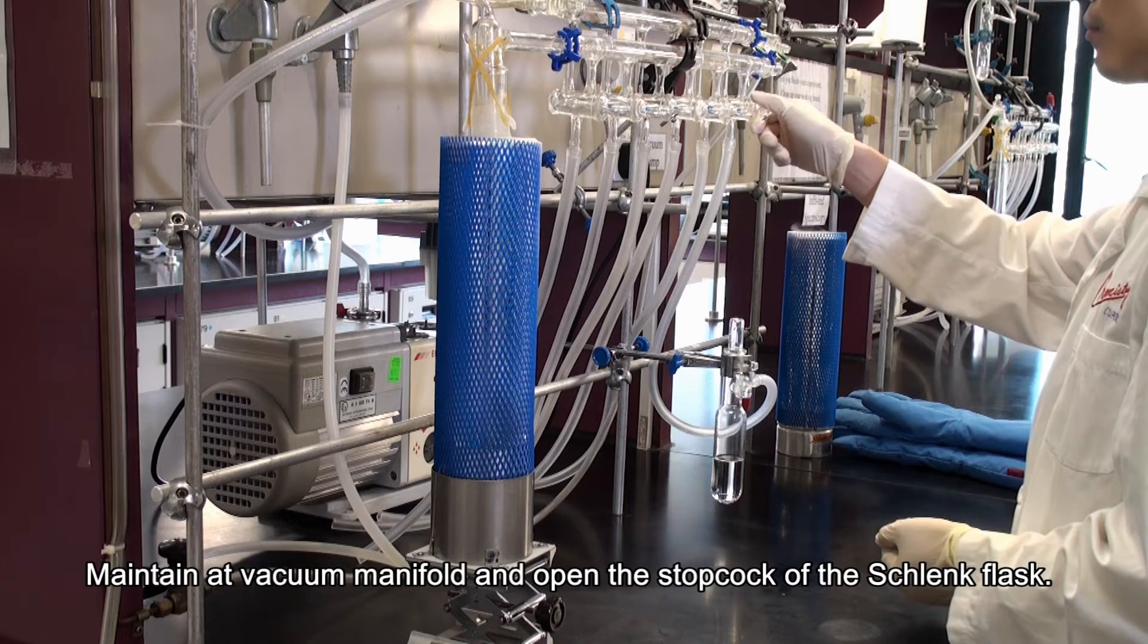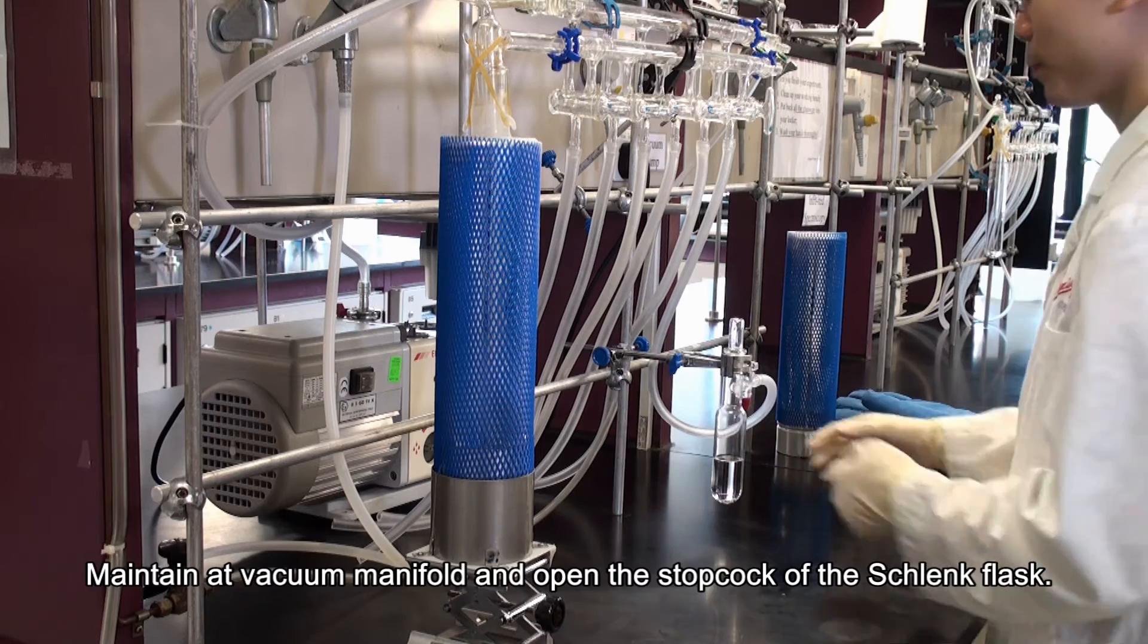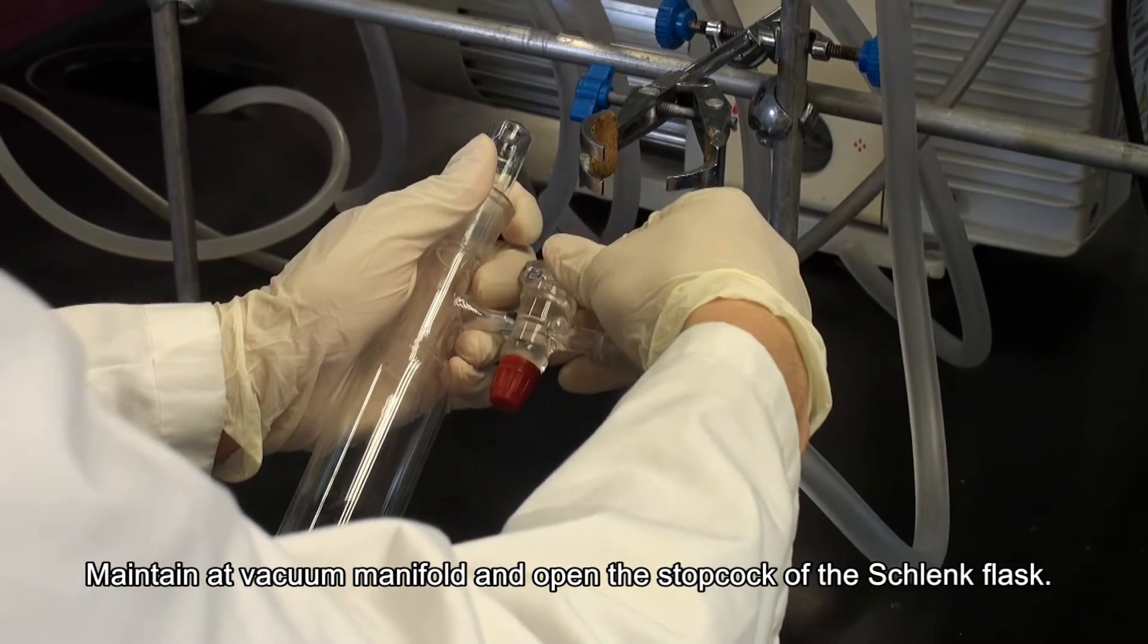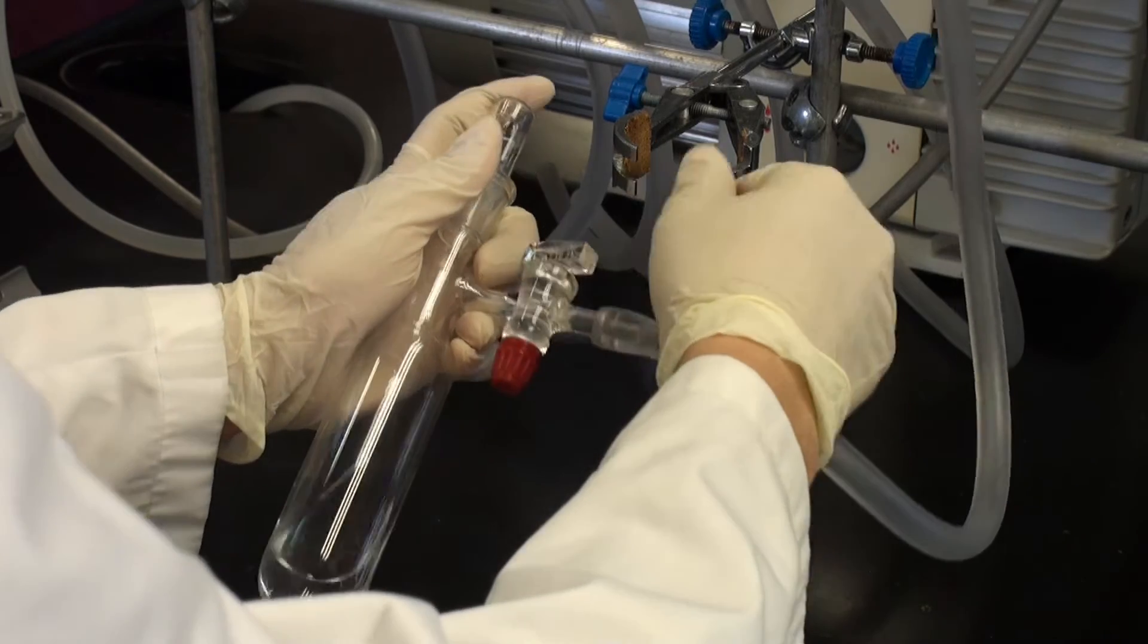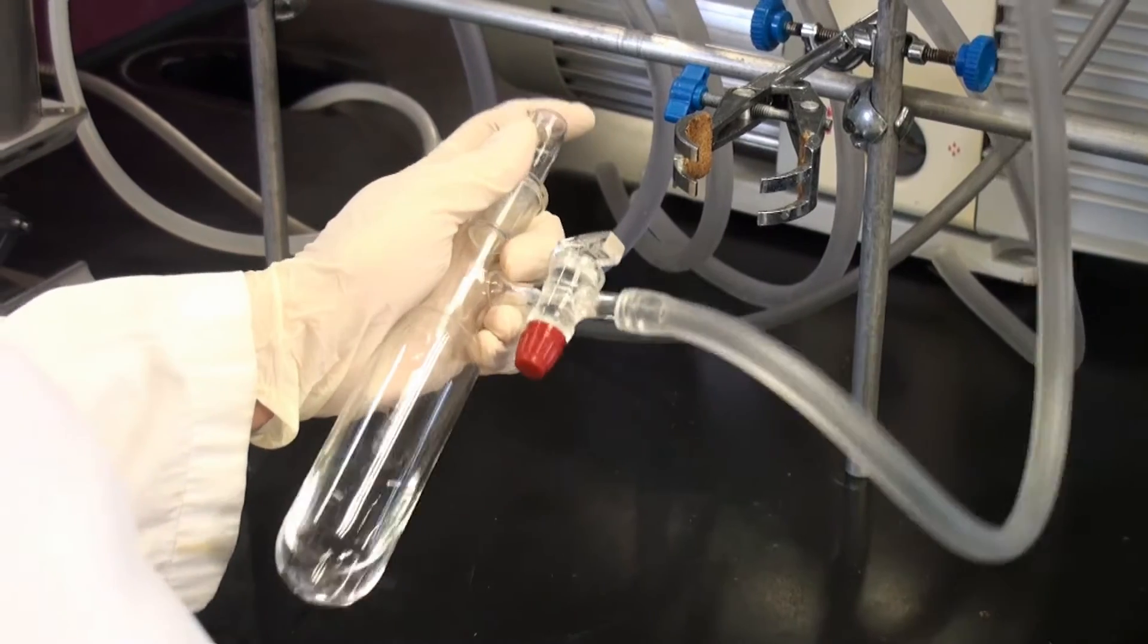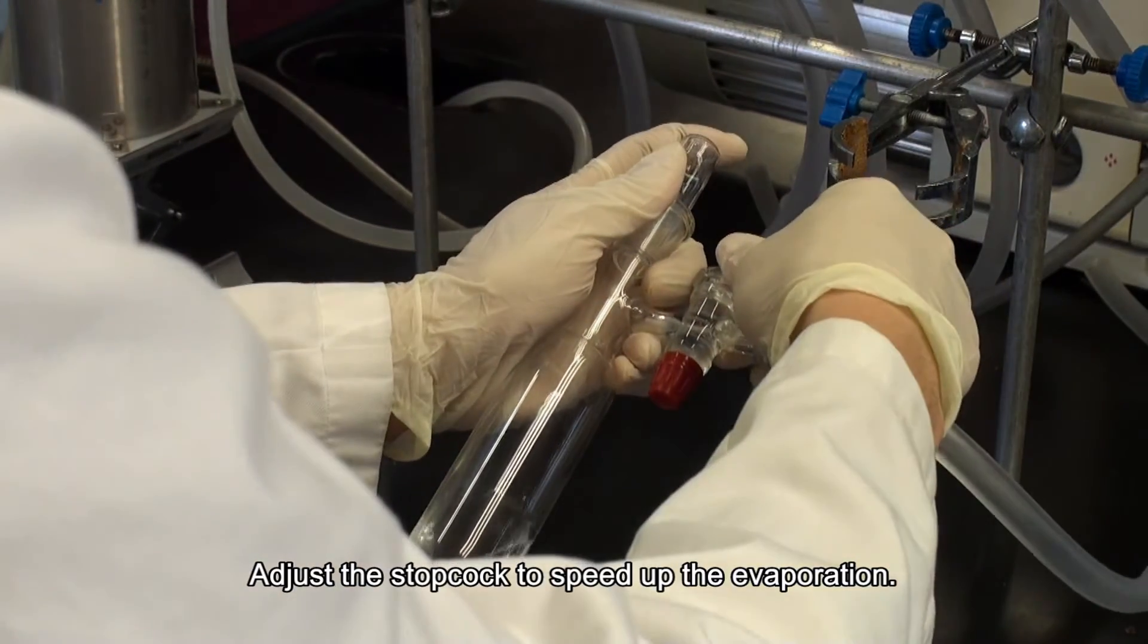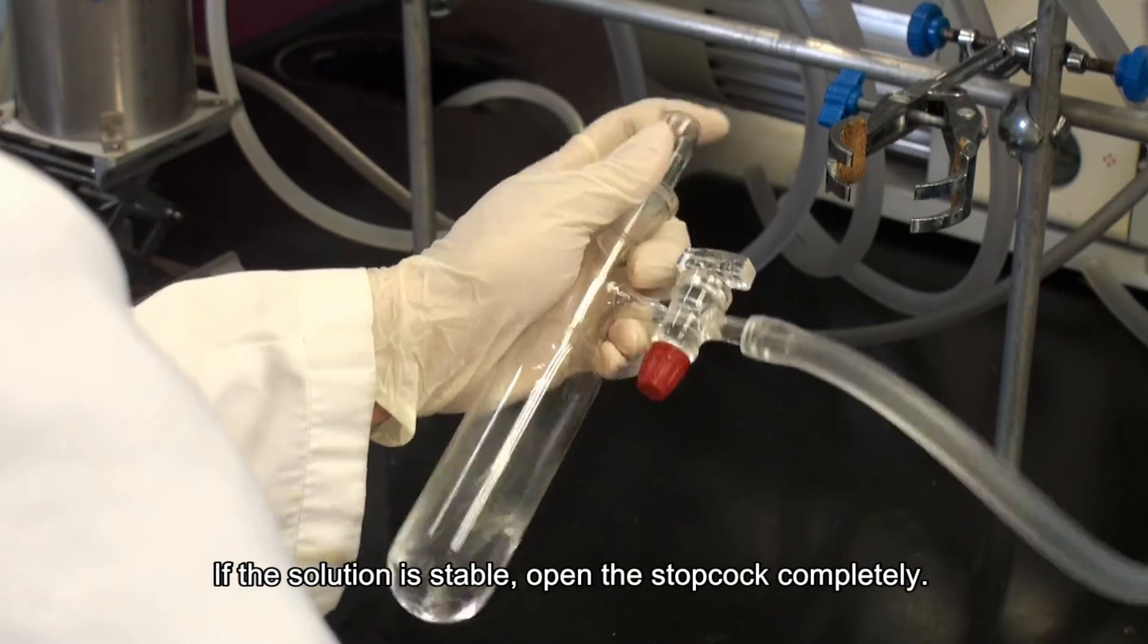Maintain a vacuum manifold and open the stopcock of the Schlenk flask. Gently swirl the Schlenk flask. Adjust the stopcock to speed up the evaporation. If the solution is stable, open the stopcock completely.